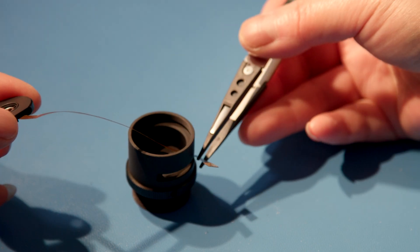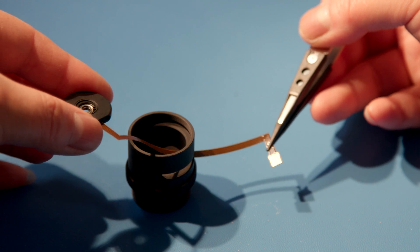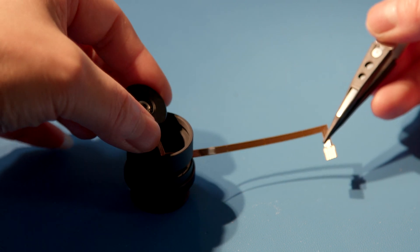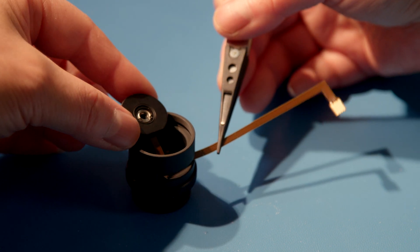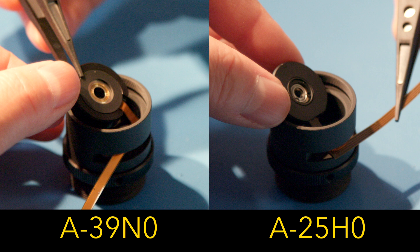Thread the ribbon of the new liquid lens through the slot in the main housing. Note that the correct orientations for the A39-N0 and A25-H0 lenses are different.